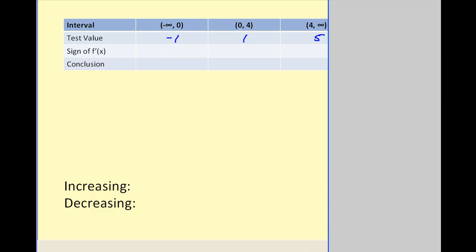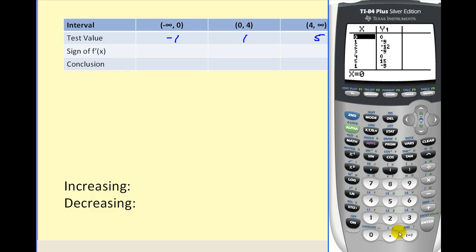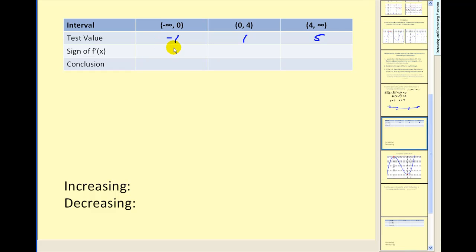We'll use the graphing calculator. The derivative function 3x² − 12x has been typed into y1. Using the table feature in ask mode, we input x equals negative one, one, and five. The first interval gives a positive value, the second is negative, and the third is positive. So the first interval is positive — increasing; the second is negative — decreasing; and the third is positive — increasing.